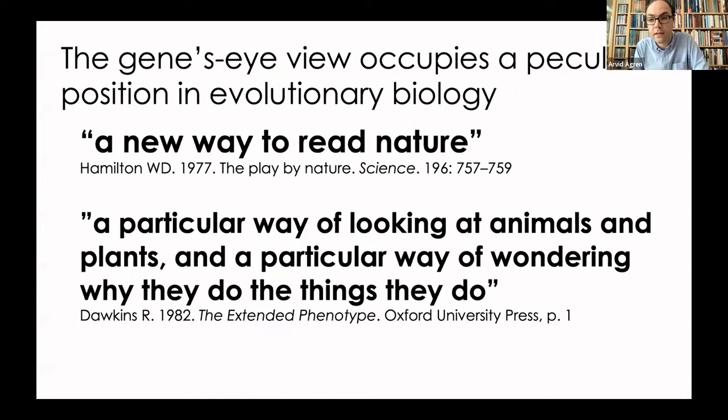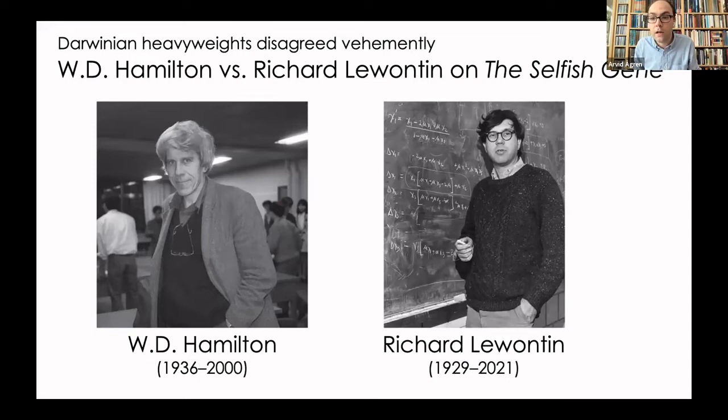Depending on who you ask, the gene's eye view either represents a foundational insight about the mechanisms of evolution and natural selection, or a deeply flawed misunderstanding of those same processes. These two attitudes are well represented by two giants of 20th century evolutionary theory — Bill Hamilton and Dick Lewontin — who disagreed vehemently about this, including in print.